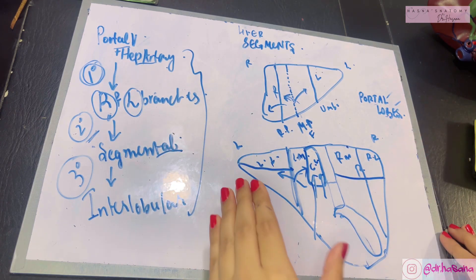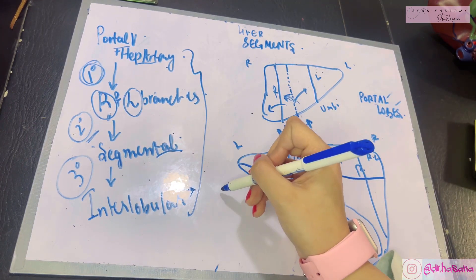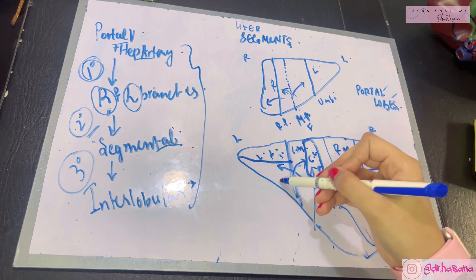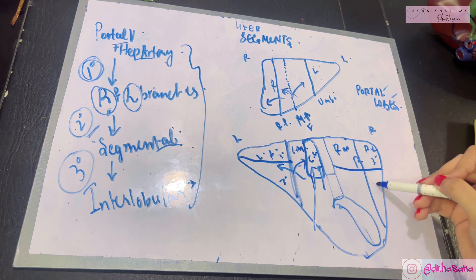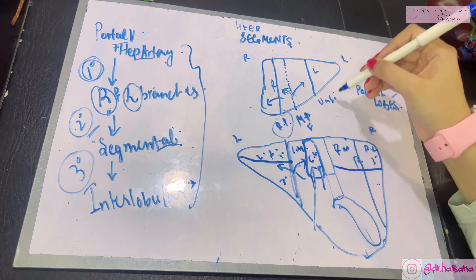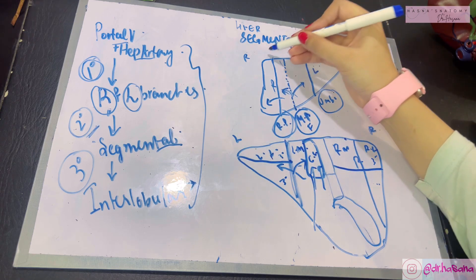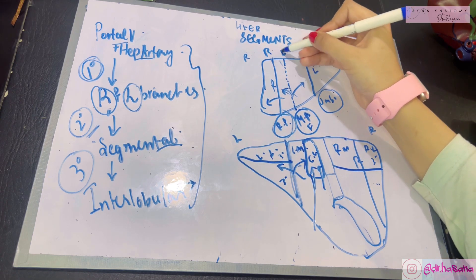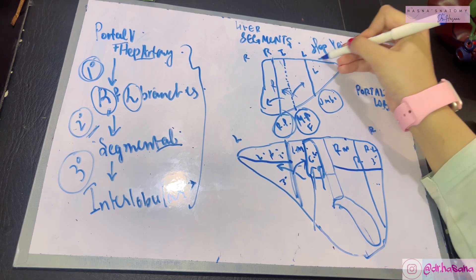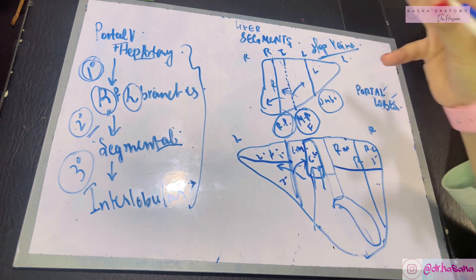Overall the liver is divided into eight segments, each extracting blood supply from third-degree vessels. Another important point: within the right portal fissure, the main portal fissure, and the umbilical fissure lie your right, intermediate, and left hepatic veins. These are very important surgically.